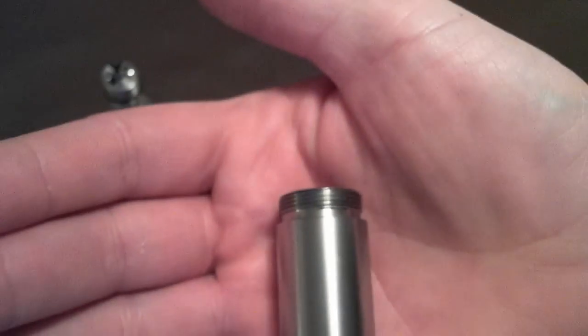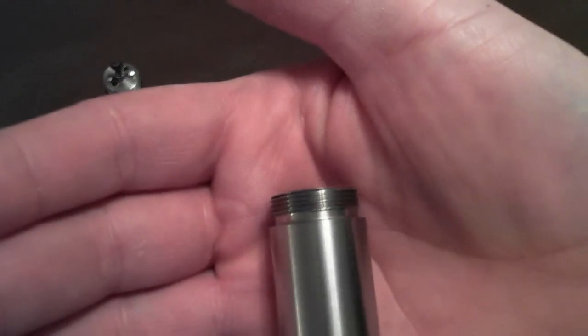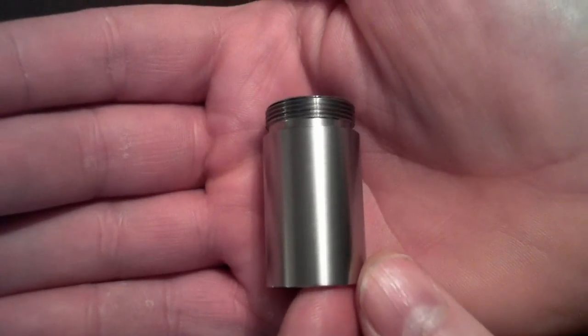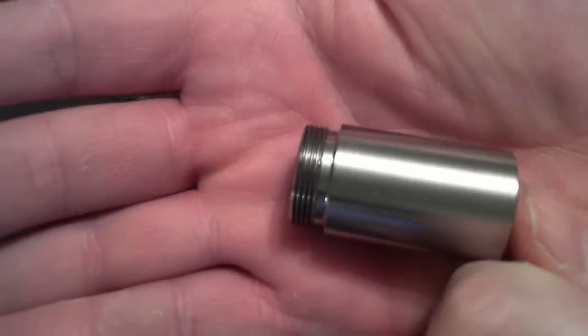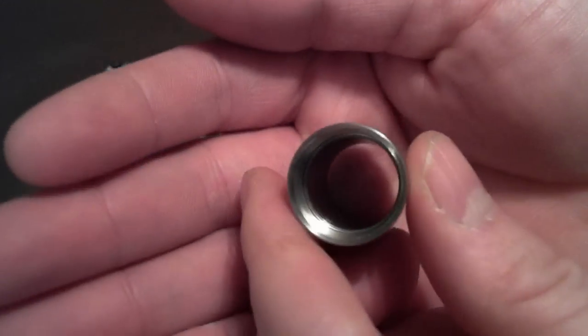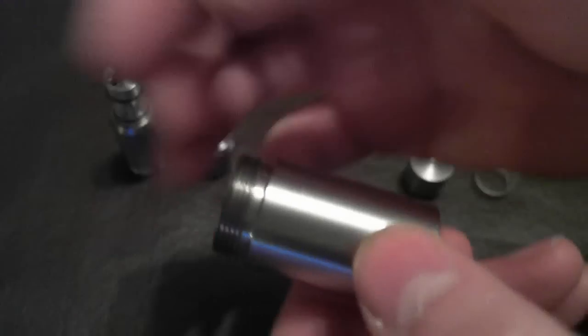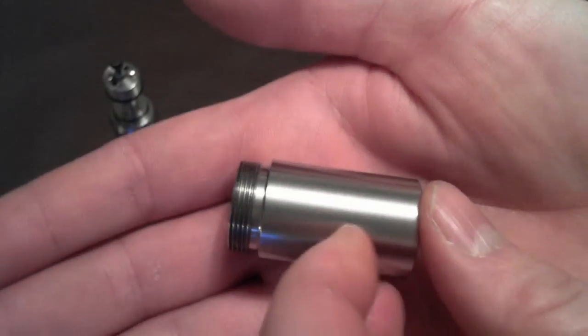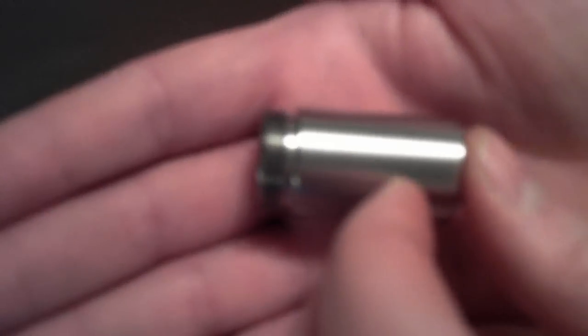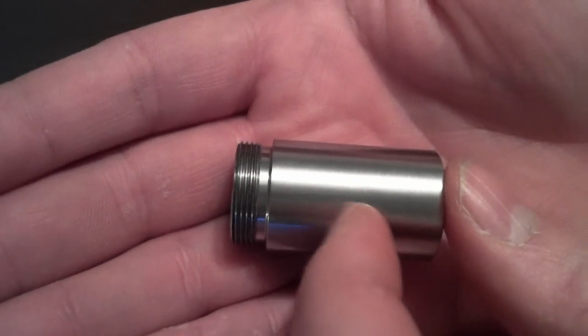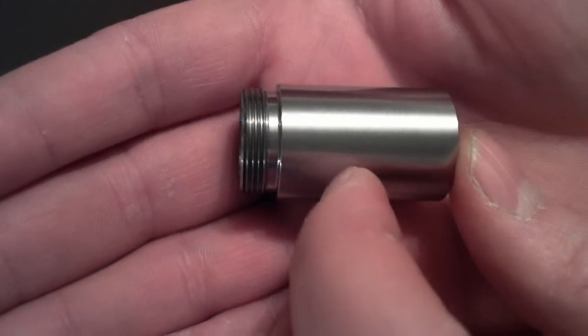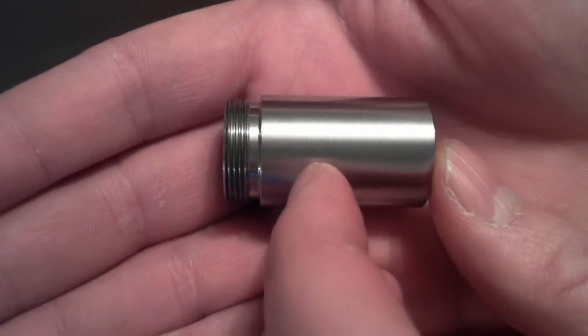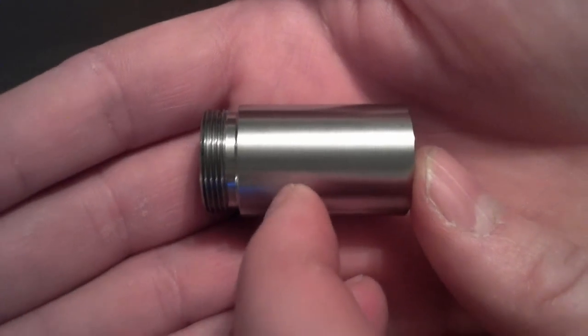Now this section right here I like to call it the 18650 tube. In order to use an 18650 battery, you will need to have this tube on. Nicely machined, and the finish on here is not a full polish but more of a satiny feel to it. Kind of like if you run your fingernail down, it's going to give that little bumpy feeling.